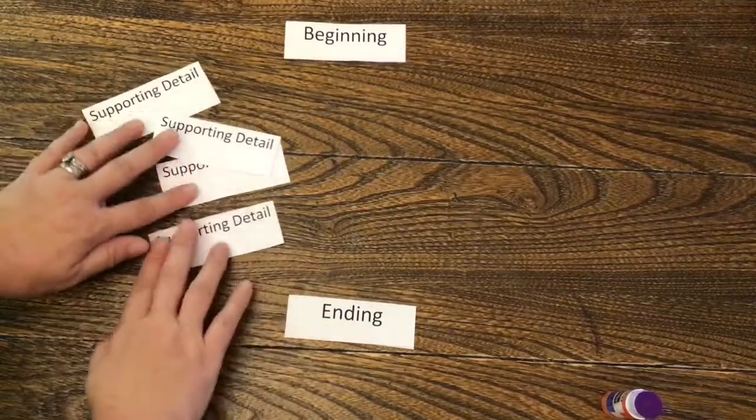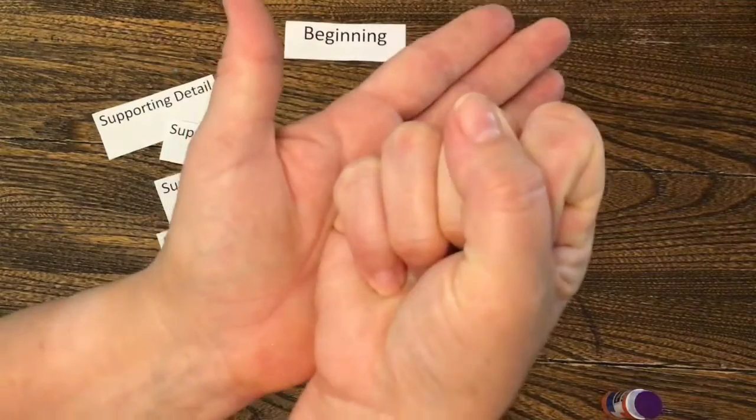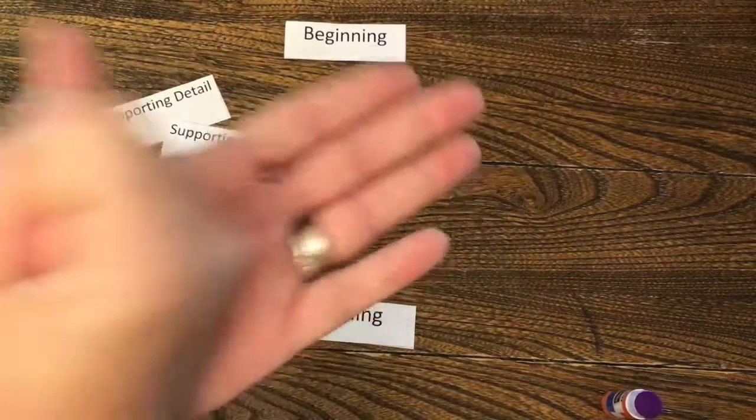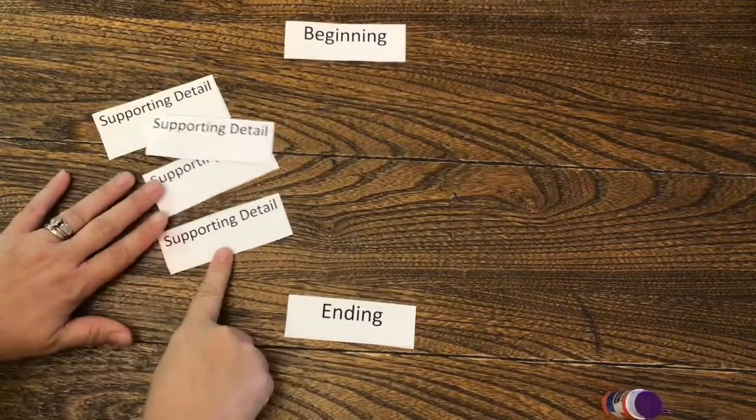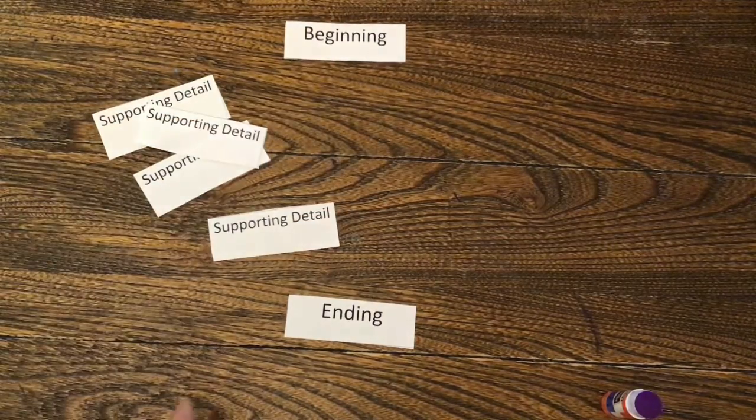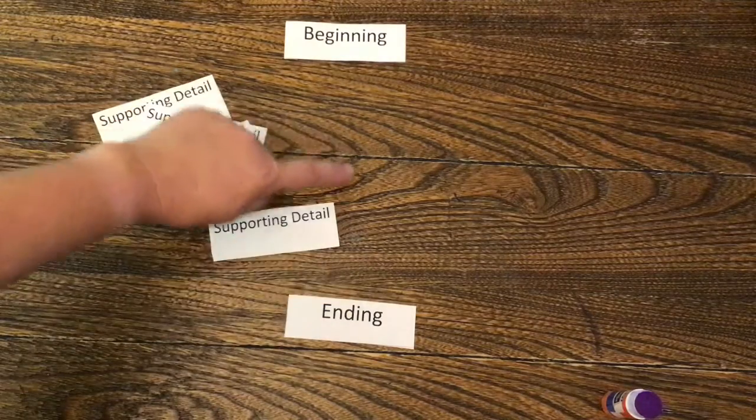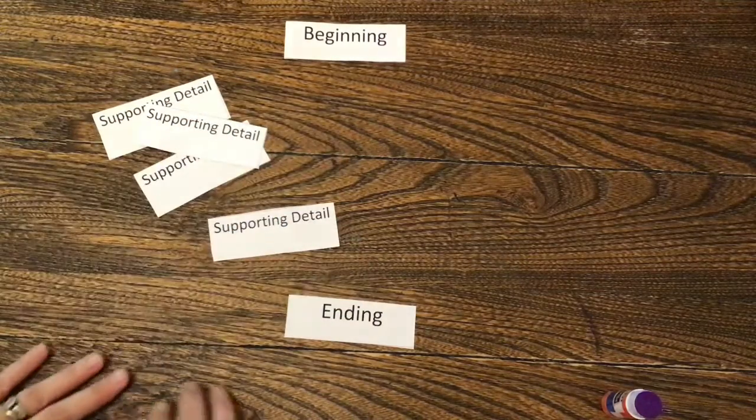Now, these four guys, they all say the same thing, supporting detail. They hold it up. They support it. They support the story. So they support it, they hold it up. It's a long way of saying the part that goes in the middle, right? Like the meat and the cheese and the lettuce and the tomatoes and the hamburger meat, right?